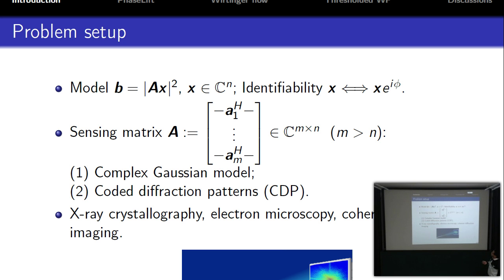Let's discuss phase retrieval. We want to recover an n-dimensional complex signal x by element-wise magnitude measurements |Ax|². Obviously, we have an identifiability issue. If we change the global phase of the signal, the quadratic measurements will be the same. So at best, we can only recover the signal up to a global phase. The whole system is determined by the sensing matrix A, which is an m-by-n matrix with m greater than n.